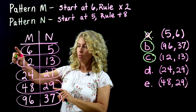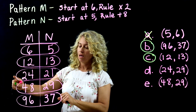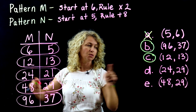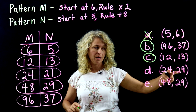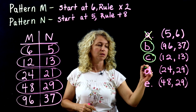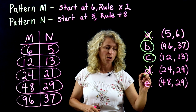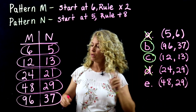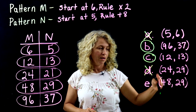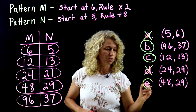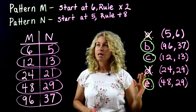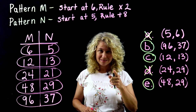If you try to do this in your head without writing it out, you might choose (24, 29) — but it's an eye trick; they don't match up. Choice (48, 29): 48 and 29 are both fourth terms and in correct X-Y format, so that is a valid answer. The correct answers are B, C, and E. Always write those patterns out!